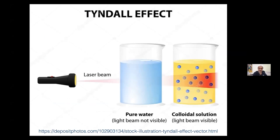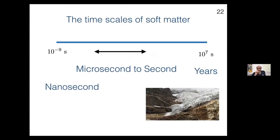Colloids also show the Tyndall effect — shine a laser beam through pure water and you cannot see the trace, but in a colloidal suspension the colloidal particles are large enough to scatter the laser light. The timescales of soft matter span roughly microsecond to second, though technically from nanoseconds — the time for a small molecule to flip — all the way to years. The motion of a glacier is also understood through ideas of rheology and soft matter; noticeable motion might be a few centimeters per year, with larger changes taking several years.